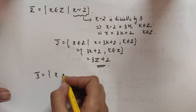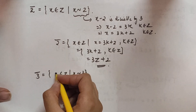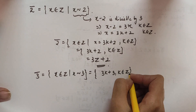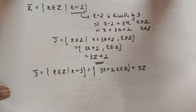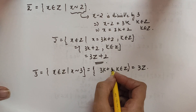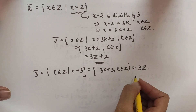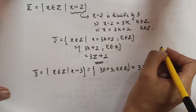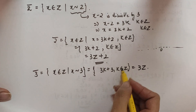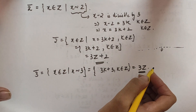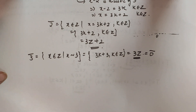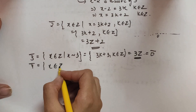Now let's find the equivalence class of 3. Skipping some steps, x = 3k + 3 = 3(k+1), and this set becomes 3Z only — because the +3 merges into the set of all integer multiples of 3, and since integers are infinite in both directions, we get the same elements as 3Z. So the equivalence class of 3 equals the equivalence class of 0. Next, for the equivalence class of 4: similarly, x = 3k + 4 = 3(k+1) + 1, giving 3Z + 1.